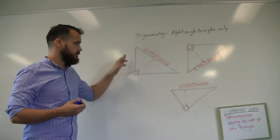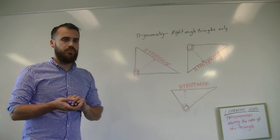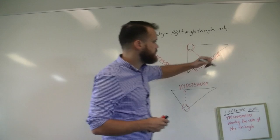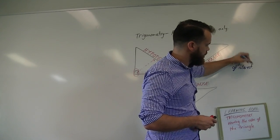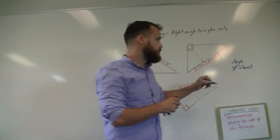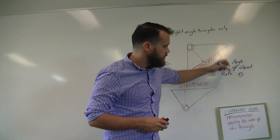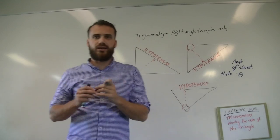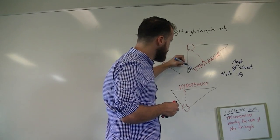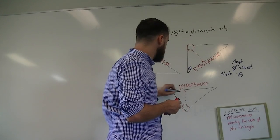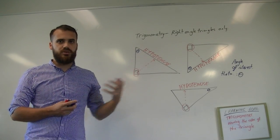Now we just need to label the other two sides — one's going to be the opposite, and one's going to be the adjacent. Before we can do that, we need to identify what's called our angle of interest. In the triangles, the angle of interest is represented by the Greek letter theta. You just need to know that theta is used for the angle of interest. I'm going to draw an angle of interest into each triangle. Without the angle of interest, you can't know which one is the opposite and which one is the adjacent.